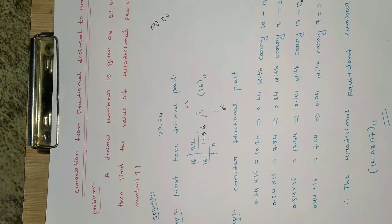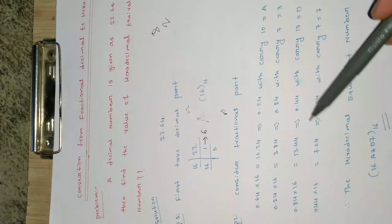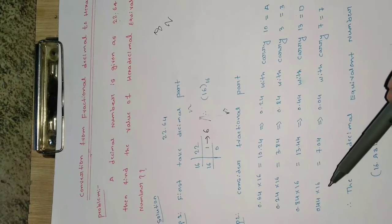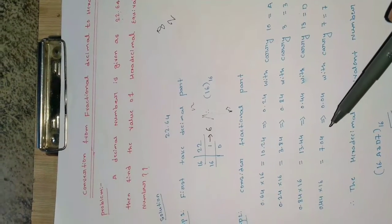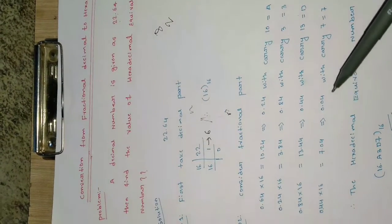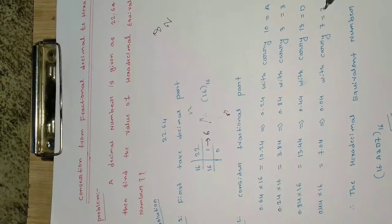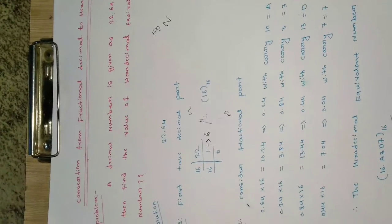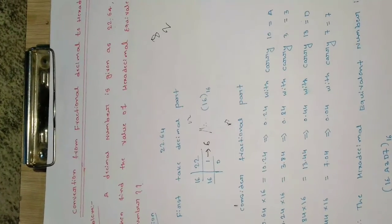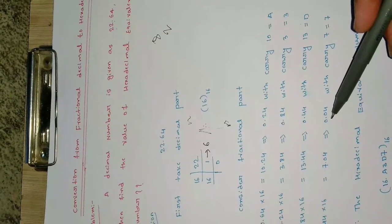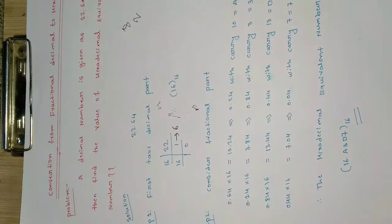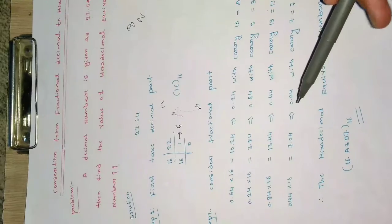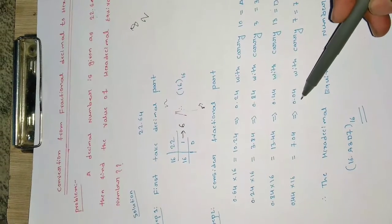0.84 is multiplied by 16, giving 13.44. The integer part 13 is taken out and is equivalent to D in hexadecimal, leaving 0.44. Then 0.44 multiplied by 16 gives 7.04. The integer part 7 is written as 7 in hexadecimal, and we are left with 0.04.